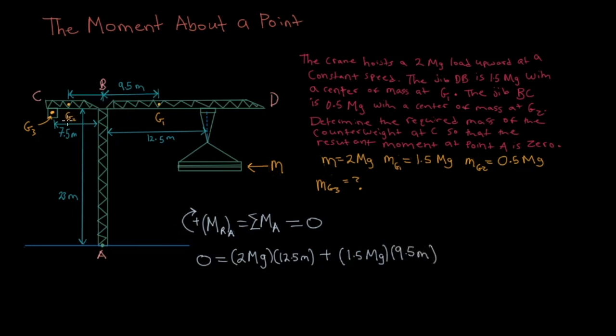Let's look over at G2. So the mass of this jib here is 0.5 megagrams. And since it's on the left side of A, it causes a counterclockwise rotation so it will be negative. So minus 0.5 megagrams times its perpendicular distance from A, which is 4 meters.